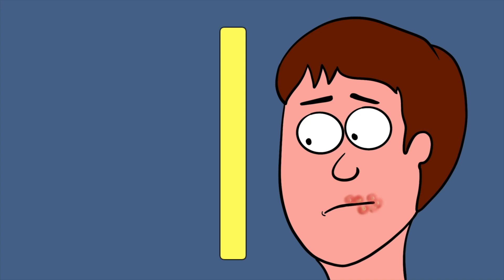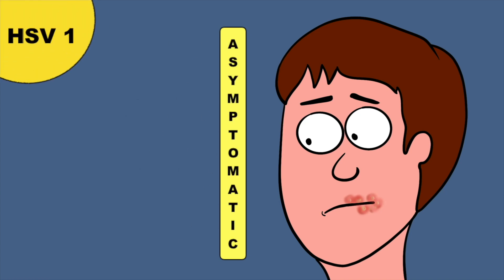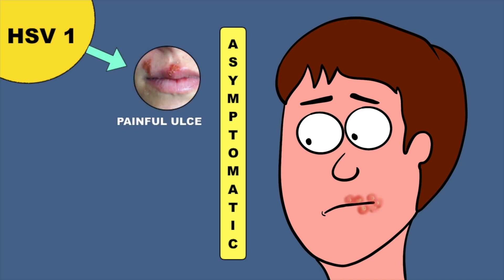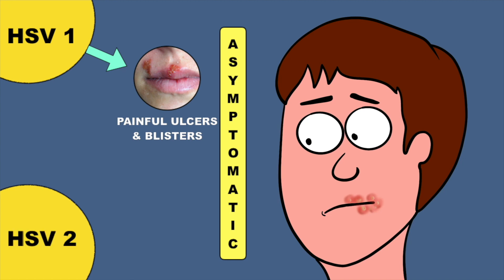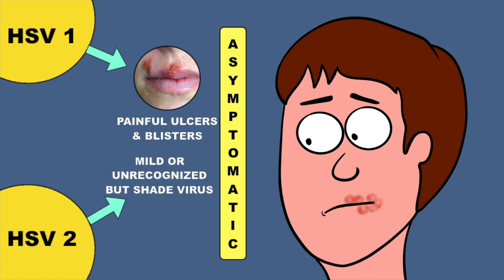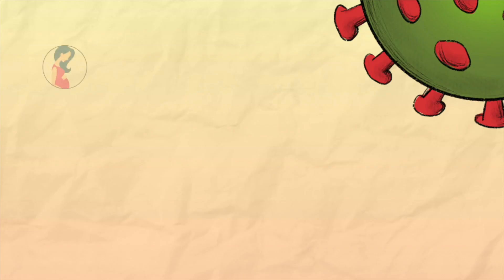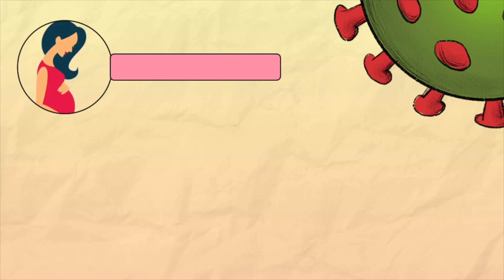Both oral and genital herpes infections are mostly asymptomatic or unrecognized. HSV type 1 can cause painful blisters or ulcers at the site of infection. Most genital herpes are transmitted by persons unaware that they have the infection or who are asymptomatic when transmission occurs. A pregnant woman with herpes virus can transmit the infection to her baby during birth if the virus is active at that time.